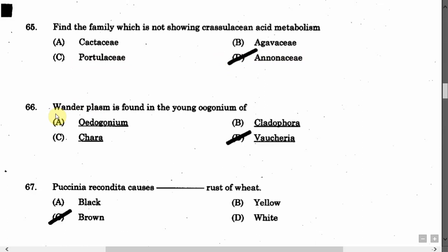The next question is: Wonderplasm is found in the young oogonium of — Option A: Oogonium. Option B: Cladophora. Option C: Chara. Option D: Oedogonium. The correct answer is Option D, that is Oedogonium.